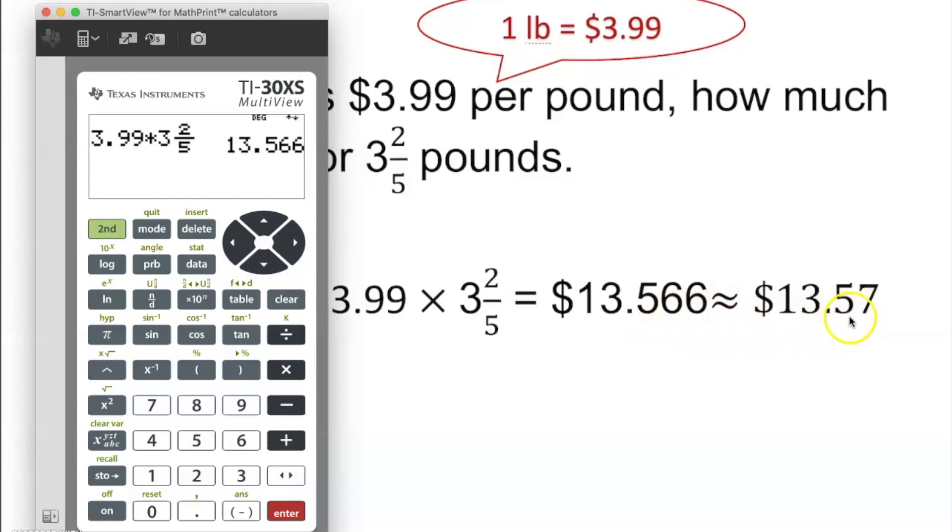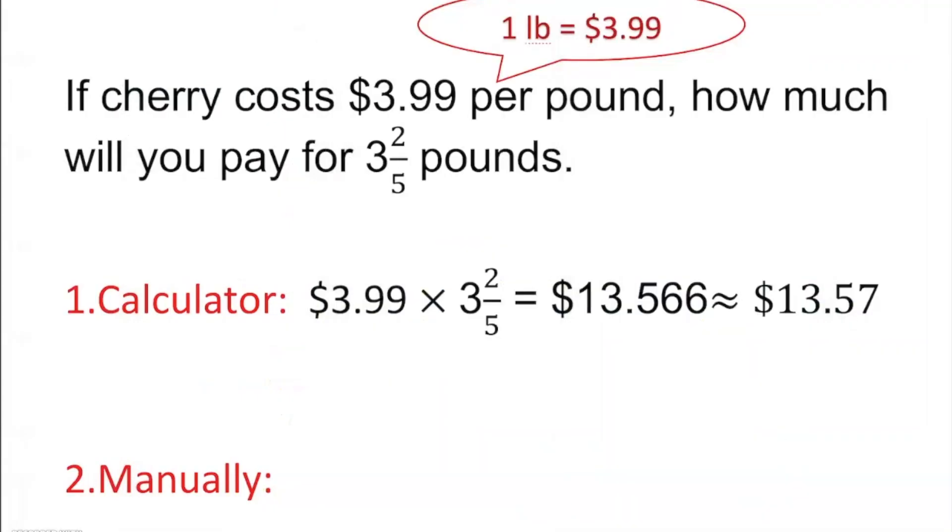We are going to say $13.57. After 99 cents, we round to the 100. We can do it in the calculator. Go to mode and we go float and go to number 2, enter. Look, $13.57. That's how we do it through the calculator.